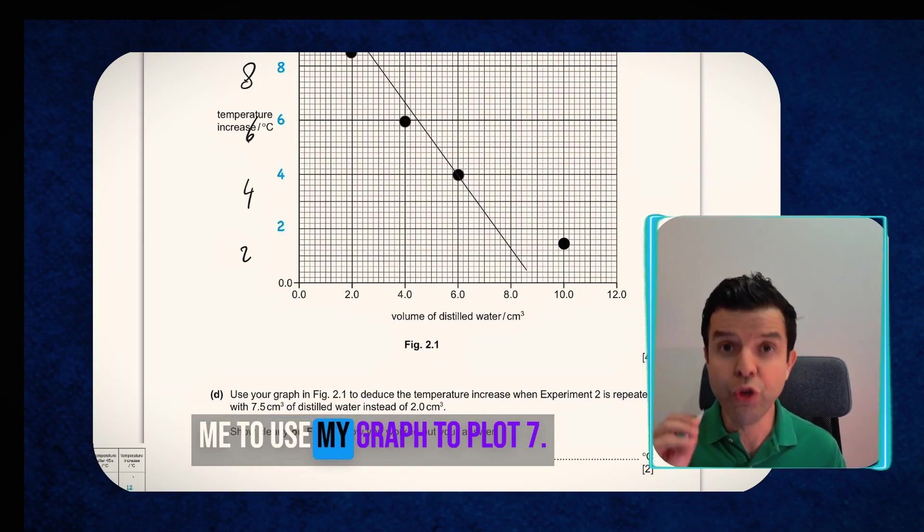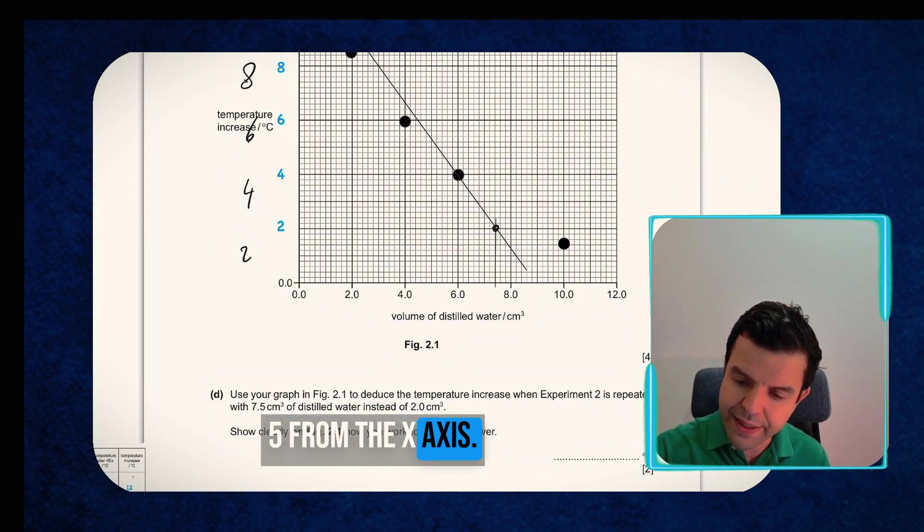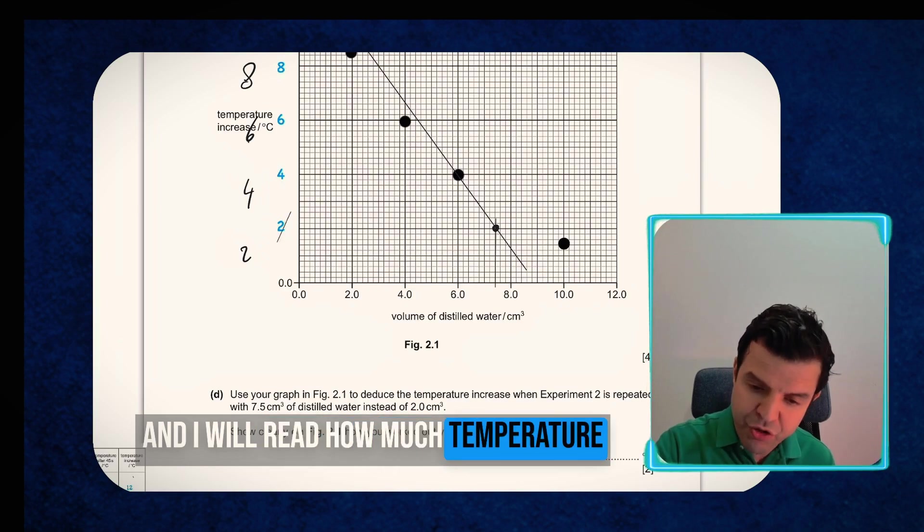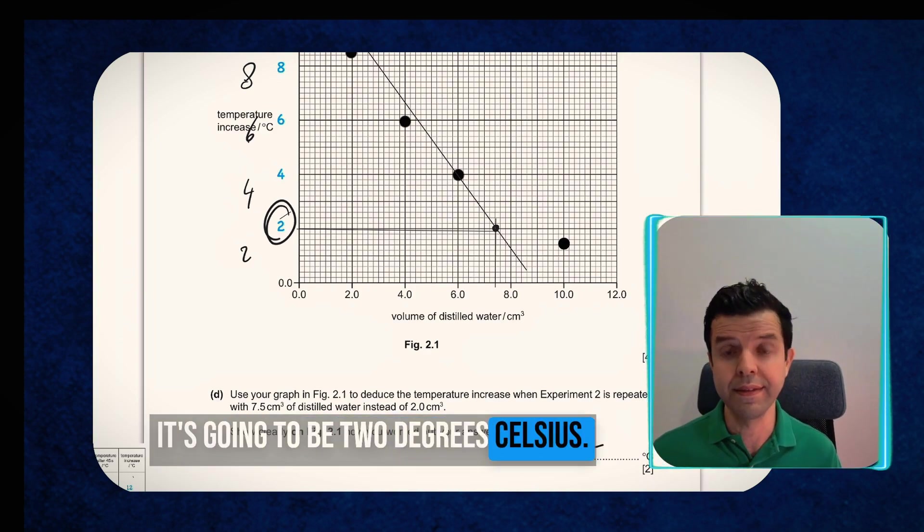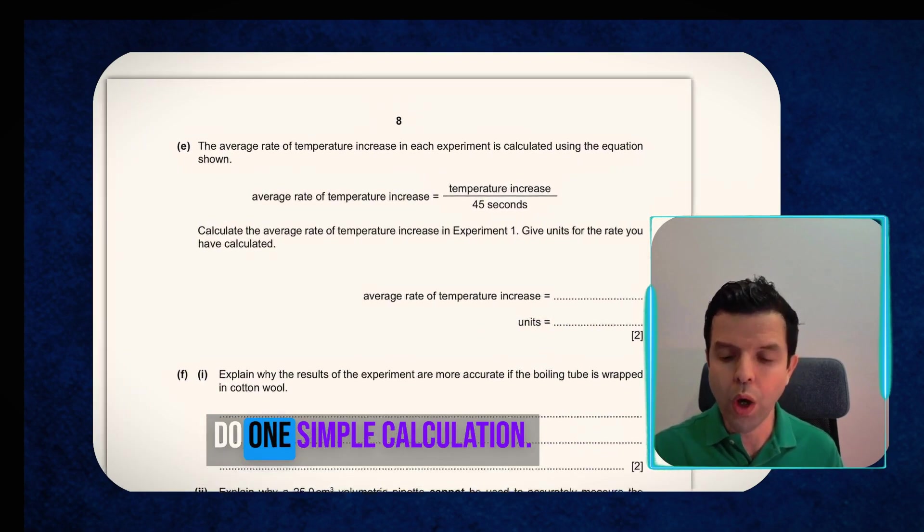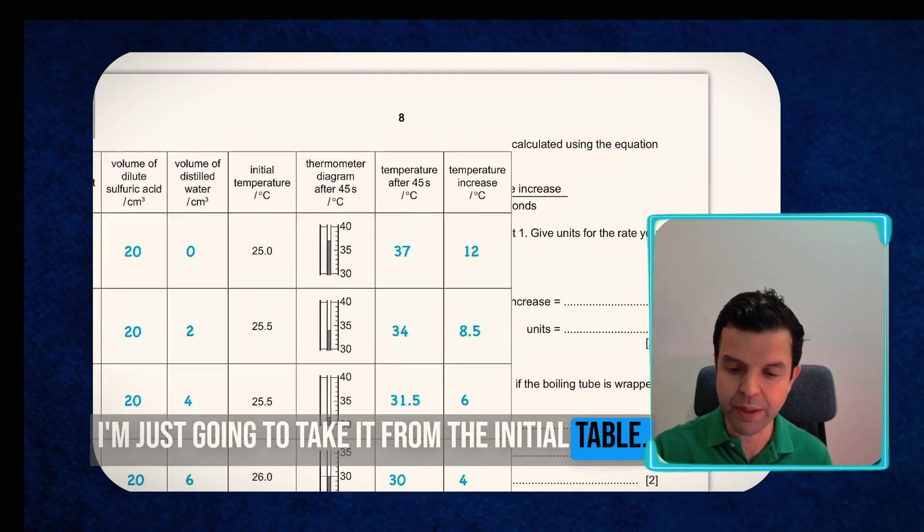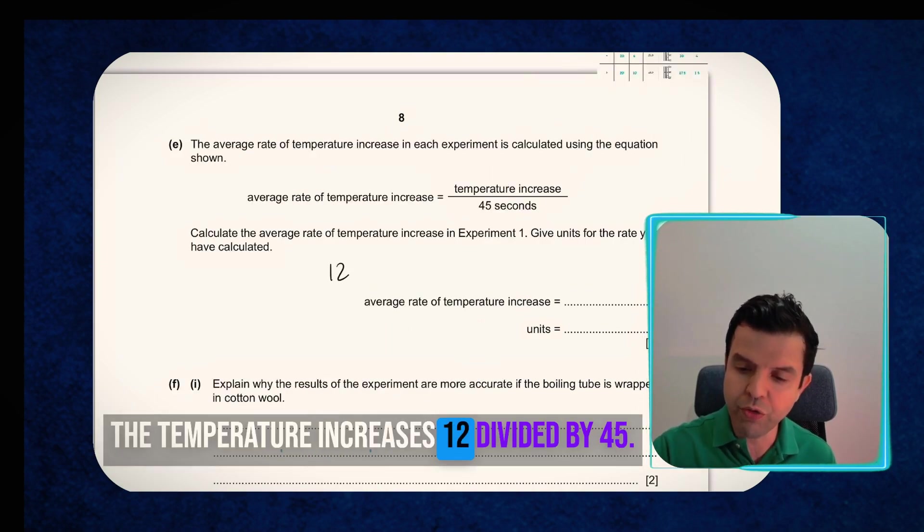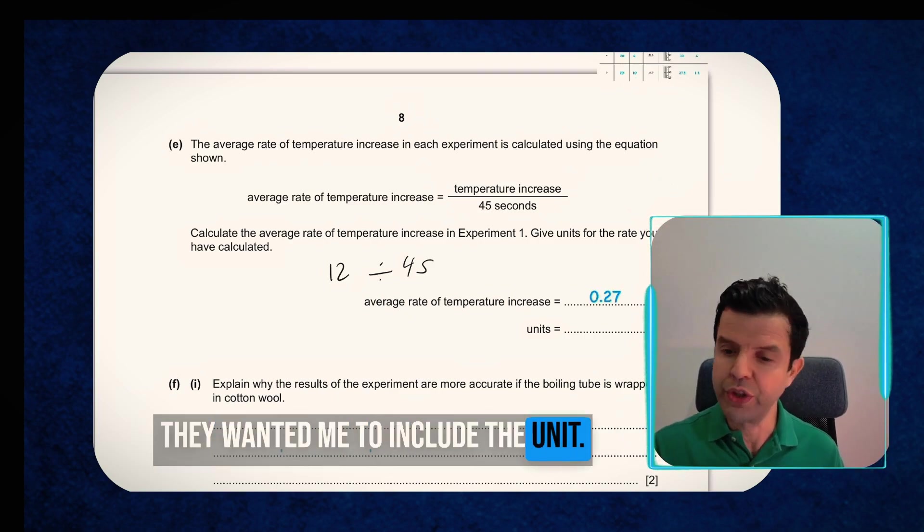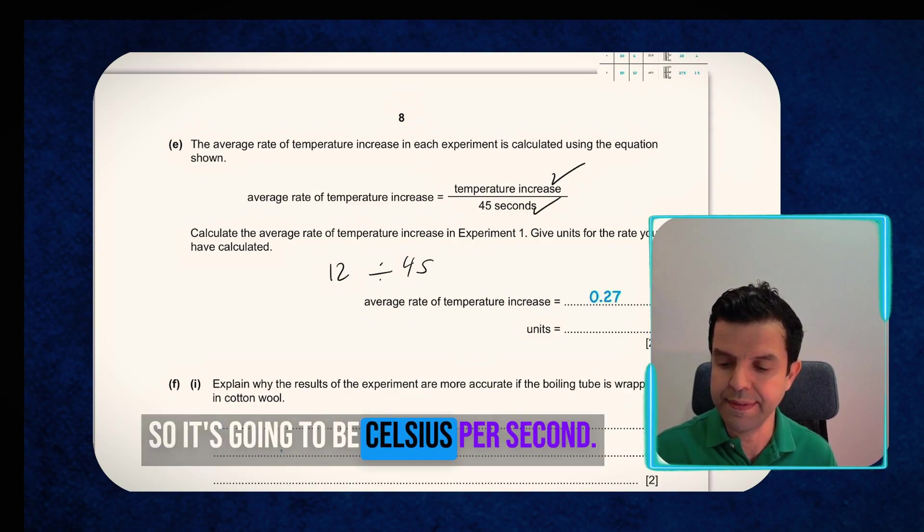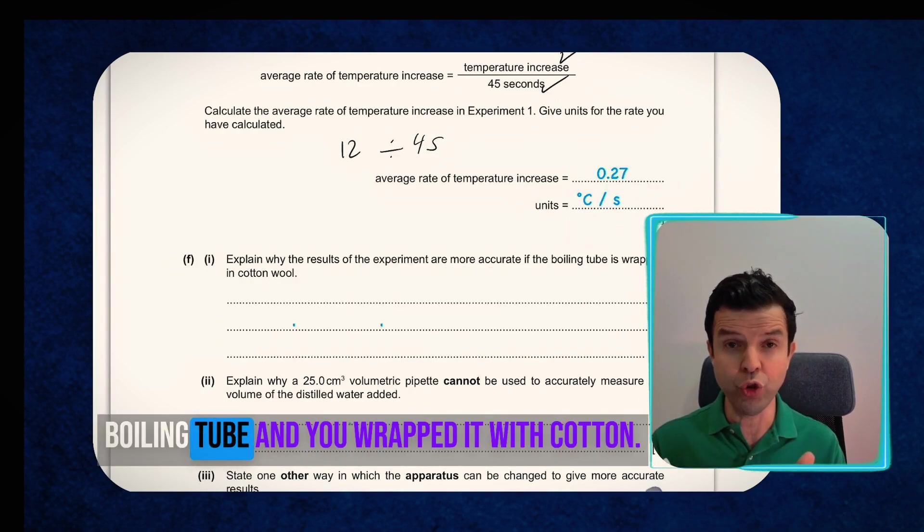For the second part, they wanted me to use my graph to plot 7.5. So that is 0.5 from the x-axis. And I will read how much temperature rise you will have in this case. So I'm just going to draw a straight line like this. And that tells you that it's going to be 2 degrees Celsius. Next, they wanted me to do one simple calculation. So you need the temperature increase for experiment 1. I'm just going to take it from the initial table. That's at 12. The temperature increase is 12 divided by 45. You get average temperature increase. They wanted me to include the unit. So it's a unit of temperature over a unit of time. So it's going to be Celsius per second.